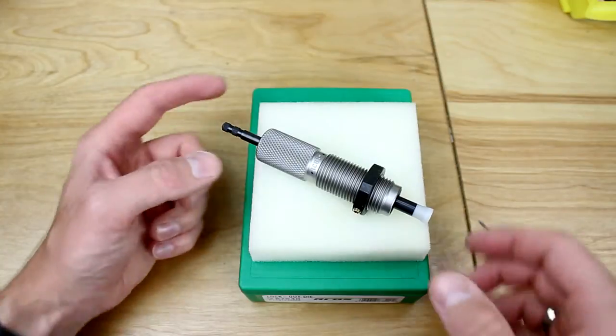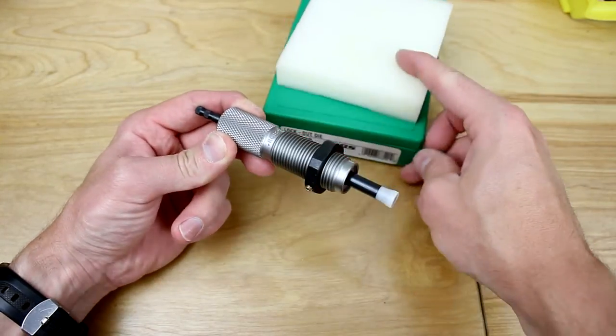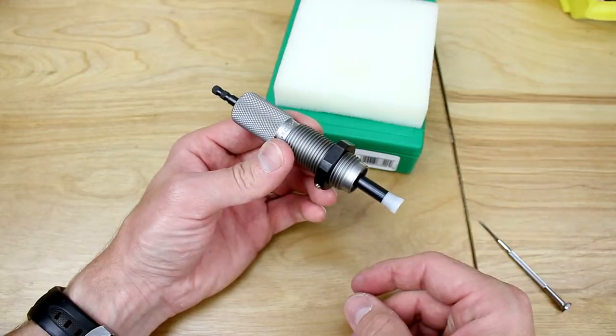Alright, let's take a look at the RCBS lockout die, how to disassemble the die and take a look at the parts that make up the assembly.